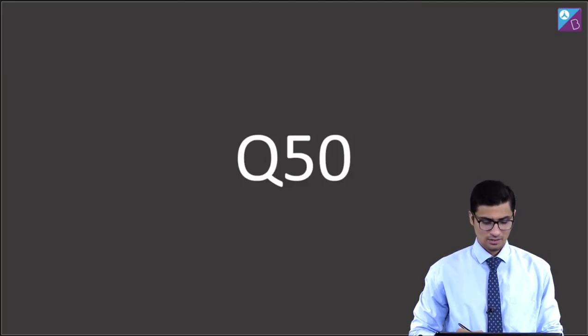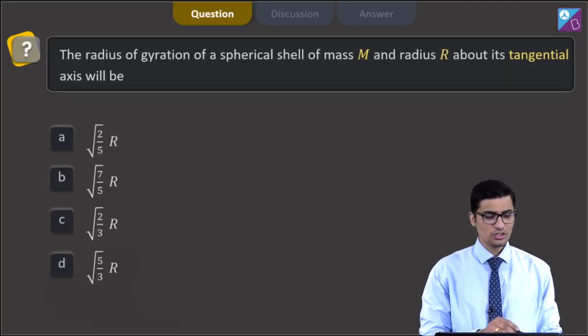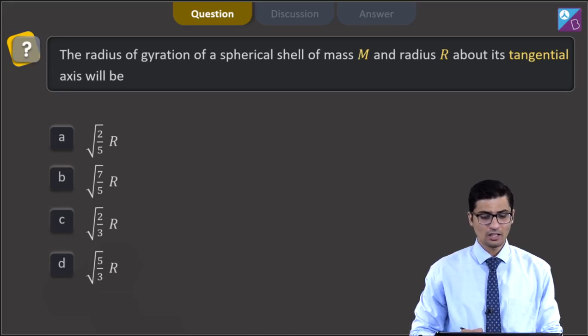This is question 50. The question states, the radius of gyration of a spherical shell of mass capital M and radius R about its tangential axis will be root 2 by 5 R, root 7 by 5 R, root 2 by 3 R or D that is root 5 by 3 R.